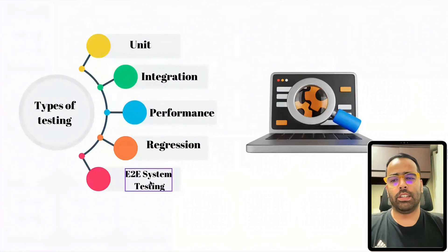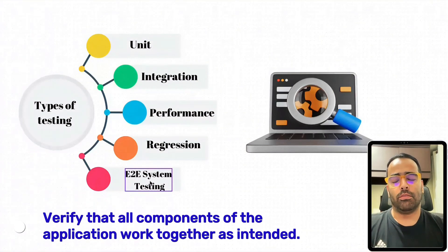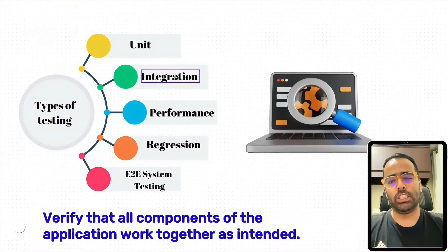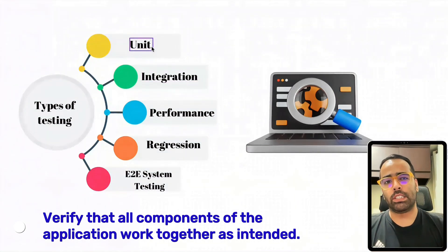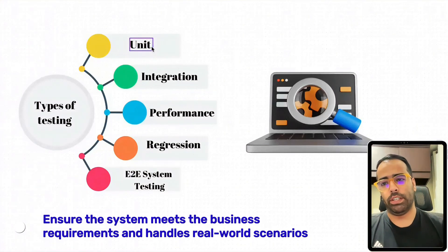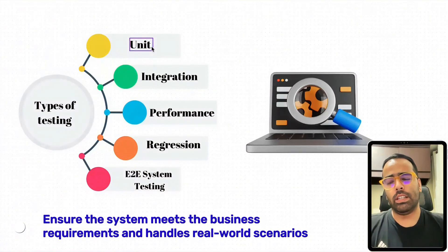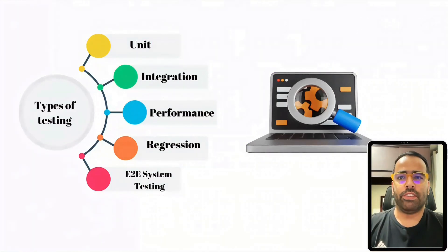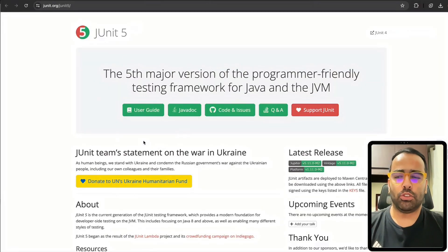Finally, there is end-to-end testing, also called system testing. Think of YouTube as a product — inside that product they have hundreds of different modules, and under each module maybe thousands of classes. YouTube would test the entire flow, like uploading a video and measuring how long it takes. That's end-to-end testing. So that's the high-level overview of testing types.